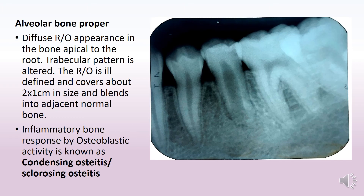The alveolar bone proper, the area of bone seen below the apical portion of the root, shows a diffuse radio-opaque appearance with an altered trabecular pattern — it does not look like the normal stepladder pattern. The radio-opacity is ill-defined, covers roughly 2 by 1 cm in size, and blends into the adjacent normal bone so that its boundaries cannot be made out. This is called an inflammatory bone response due to osteoblastic activity, known as condensing osteitis or sclerosing osteitis.